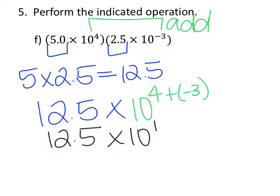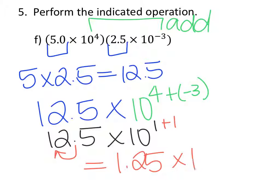But we know that this is not in scientific notation because 12.5 is not between 1 and 10. So that means we're going to have to move the decimal in 12.5 one to the left. And if we move it 1 to the left, that means we need to add 1 to the exponent. So the final answer will be 1.25 times 10 to the second.